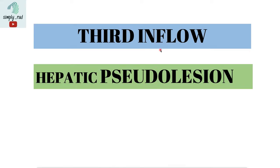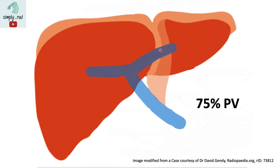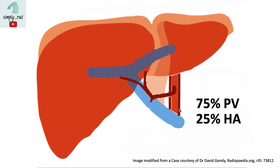Why is it called third inflow? It's called third inflow because the portal vein is the first flow, providing most of the liver blood supply, while the hepatic artery supplies the rest. The difference in this blood flow explains why the liver is maximally enhanced in the portal venous phase.